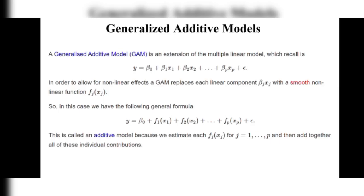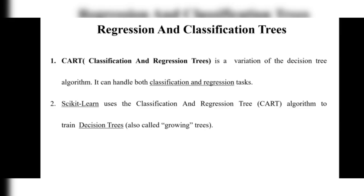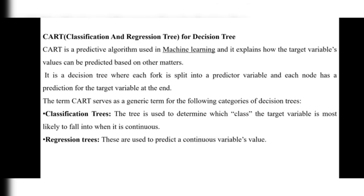The second main topic is Regression and Classification Trees. CART stands for Classification and Regression Trees, which is a variation of the decision tree algorithm. It can handle both classification and regression tasks. Scikit-learn (sklearn) uses the CART algorithm to train decision trees, also called growing trees.